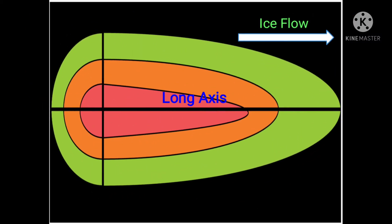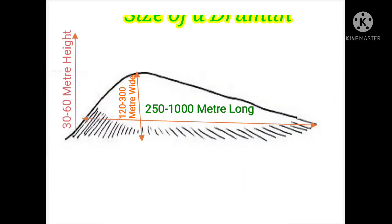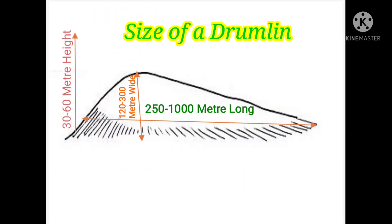Generally, drumlins are elongated and oval-shaped hills with a long axis. This long axis of a drumlin indicates the direction in which the glacier was moving. Drumlins may be 250m to 1000m long, 120m to 300m wide, and 30m to 60m in height.